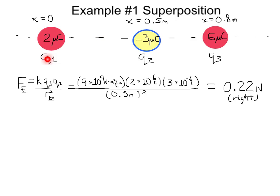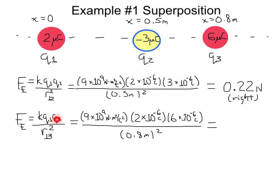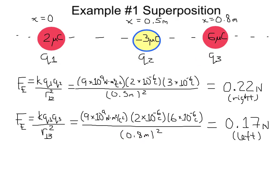Now let's calculate the force between Q1 and Q3. We have K times Q1 times Q3 divided by R13 squared, where K is nine times ten to the ninth, Q1 is two times ten to the minus six coulombs, Q3 is six times ten to the minus six coulombs, and they are separated by 0.8 meters. This results in a net force of 0.17 newtons to the left, since the positive two microcoulomb charge is pushed to the left by the positive six microcoulomb charge.